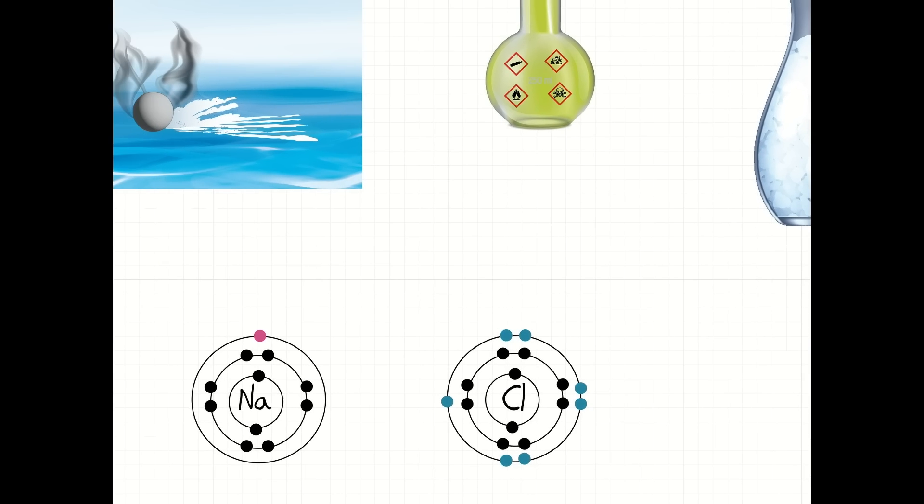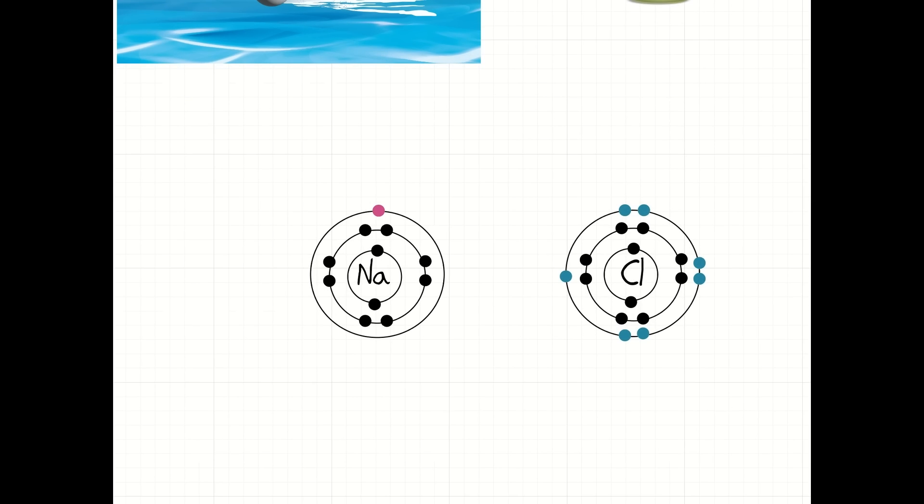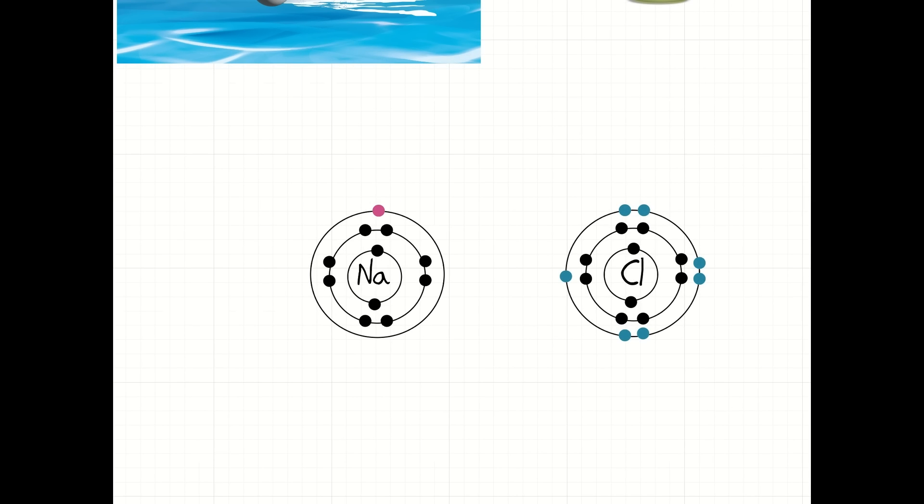Firstly, metals lose electrons to get a stable, full outer shell when they react with non-metals. Sodium, over here, has one electron in its outer shell, and what it needs to do to get a full outer shell, a stable full outer shell, is lose this outer shell electron. It loses it, and then what you can see here is a stable, full outer shell.